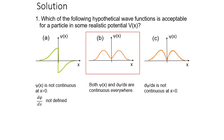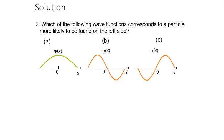In the second case, both psi of x and its derivative d psi/dx are defined and continuous, so it is an acceptable wave function. In the third case, d psi/dx is not continuous at the sharp edge: the derivative from one side differs from the other, so the derivative is discontinuous at x equal to zero, making it not acceptable.